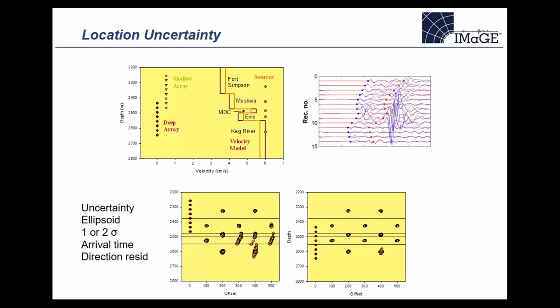One particularly important aspect of the processing and quality control is location uncertainty — the error ellipsoids, or error bars, associated with the estimated microseismic locations. The study shown was done on a formation in Canada's Horn River Basin, just meant to be a general study. In the upper left there's a layered velocity model consistent with significant velocity variations at different depths.